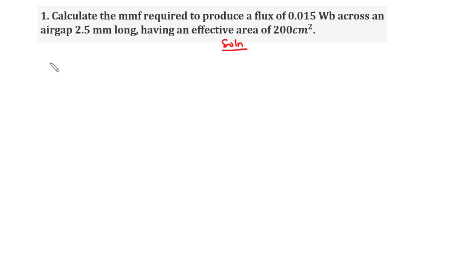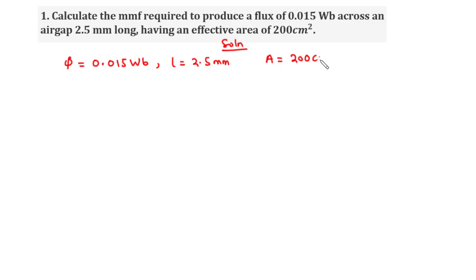From this question, we are given the magnetic flux to be 0.015 Webers, the length of the air gap to be 2.5 mm, and the effective area to be 200 cm². We are asked to find the MMF across the air gap. To do so, let's first convert the length from millimeters to meters and the effective area from cm² to m². To convert L from millimeters to meters, we multiply by 10 to the power negative 3.